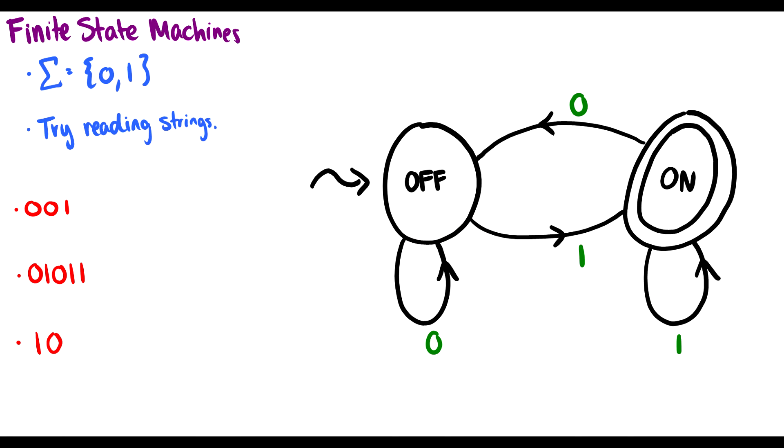Now we can introduce something called finite state machines. Finite state machines read strings and they either accept them or they reject them. Before I really introduce what it is, let's run through this finite state machine with some strings and read them.